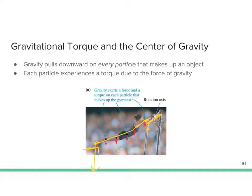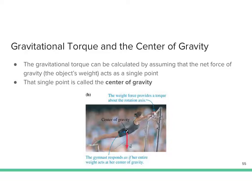Every single particle experiences a torque — so how would we calculate that? The answer is: we don't. Instead, we use the center of gravity. The center of gravity takes all the points on a person's body and simplifies it to one point at the center of mass. So instead of calculating every point, we calculate one point at the center of gravity, still some radius away, with her overall weight — mass times gravity — as the force.